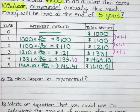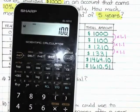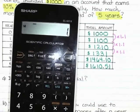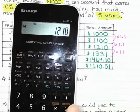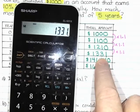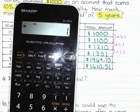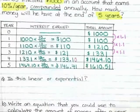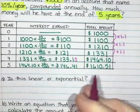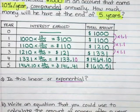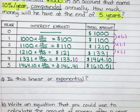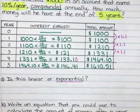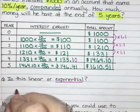So: $1,000 times 1.1 is $1,100; times 1.1 again gives $1,210; times 1.1 gives $1,331; times 1.1 gives $1,464.10. Since we're not adding the same amount but multiplying by the same amount, this is exponential growth. Exponents are repeated multiplication, and we are repeatedly multiplying by 1.1.